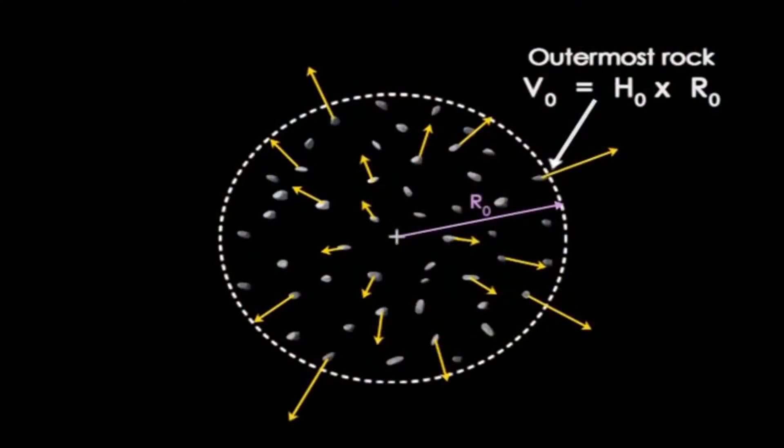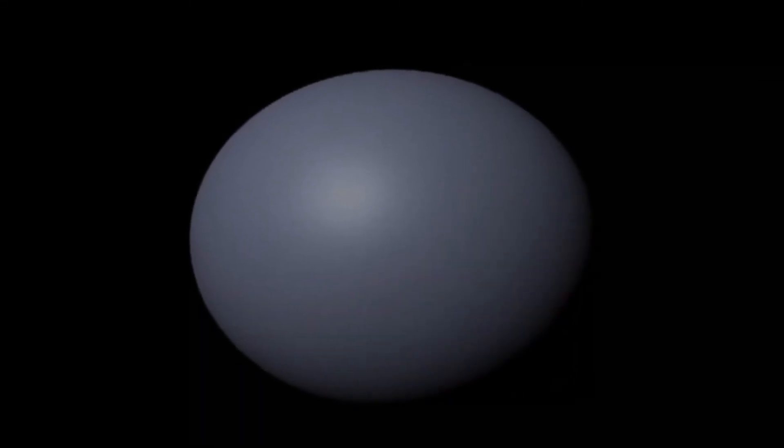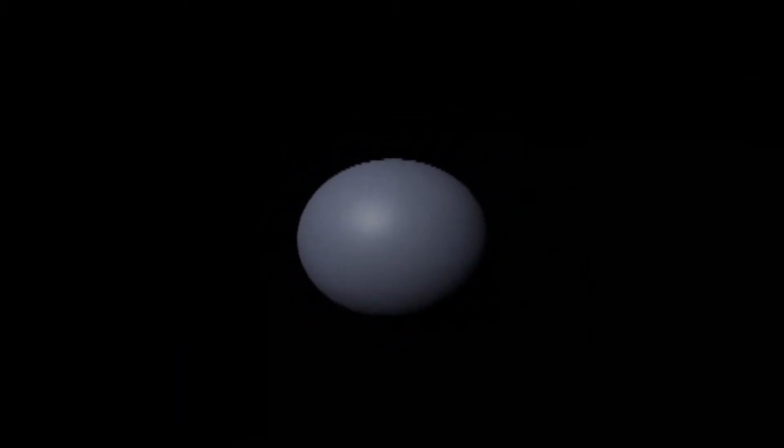Now it also turns out that what's true for the outermost rock is true for all of the rocks. So the entire set goes out and either re-collapses or continues forever. Which situation occurs depends on how the initial outward speed compares to the backward strength of gravity.